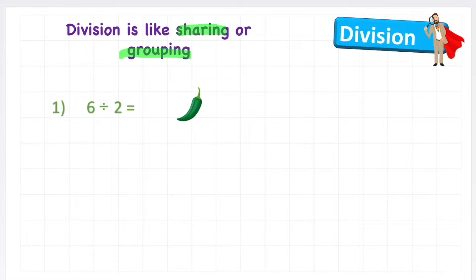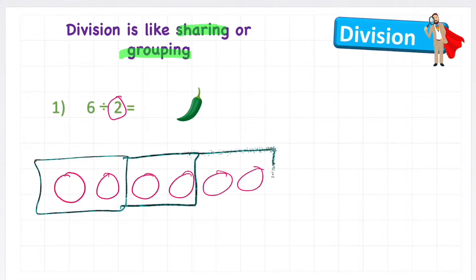So that was sharing where I share them out one by one between my friends, but also I could group. So I could draw my six cookies. One, two, three, four, five, six and I could then group them into sets of two. So here we go. This is a two, this is a two and this is a two.